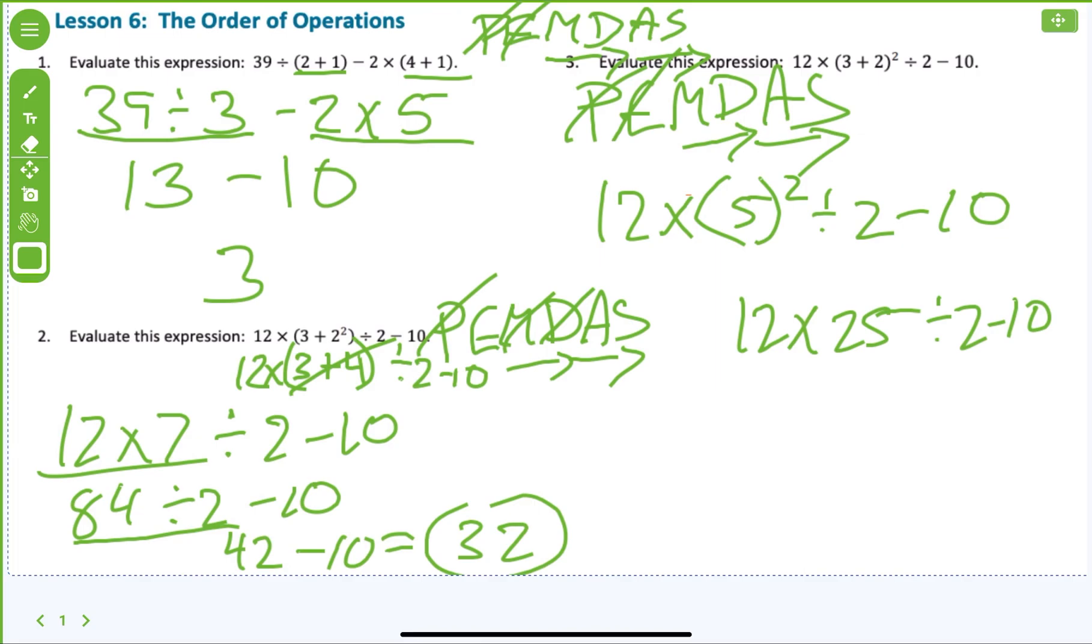Now, I've got to do multiplication first because it comes first. What is 12 times 25? Should be 300, but check it. 300. 300 divided by 2 minus 10. Now I'm done with multiplication. Now I'll do division. What's half of 300? 150 minus 10, and I get 140.